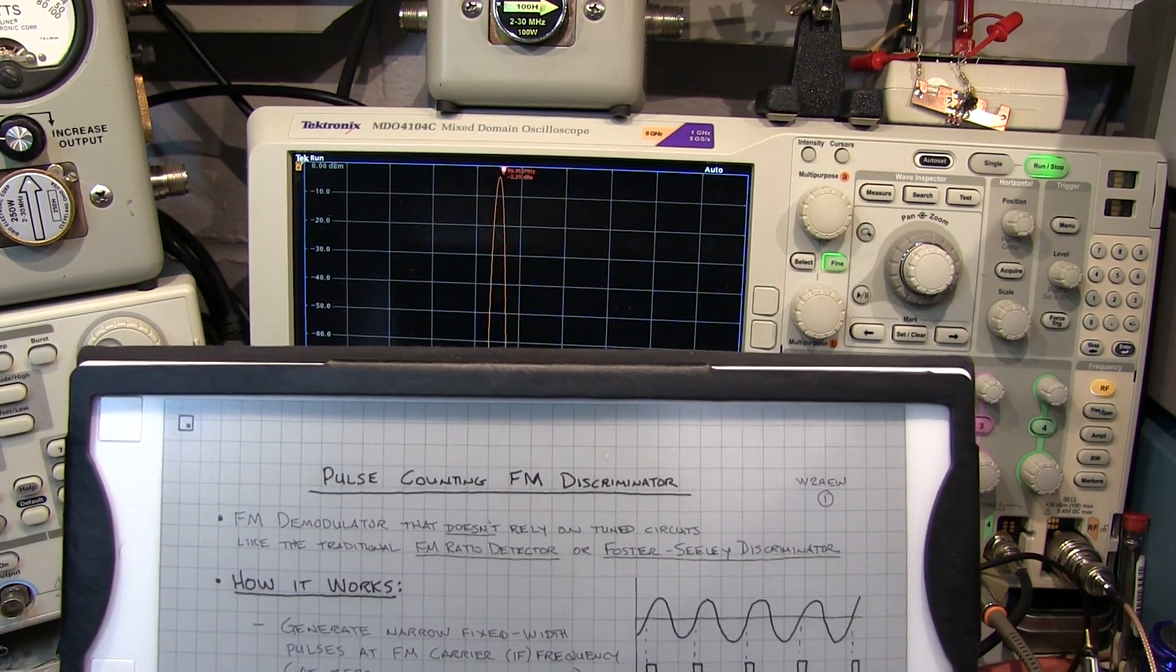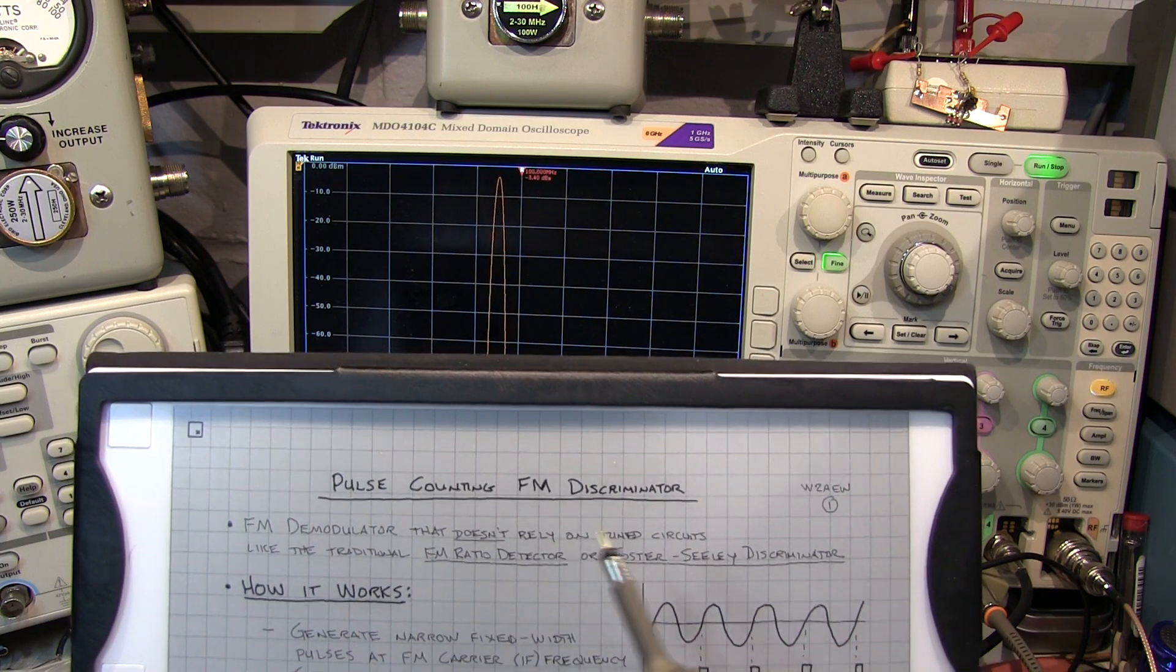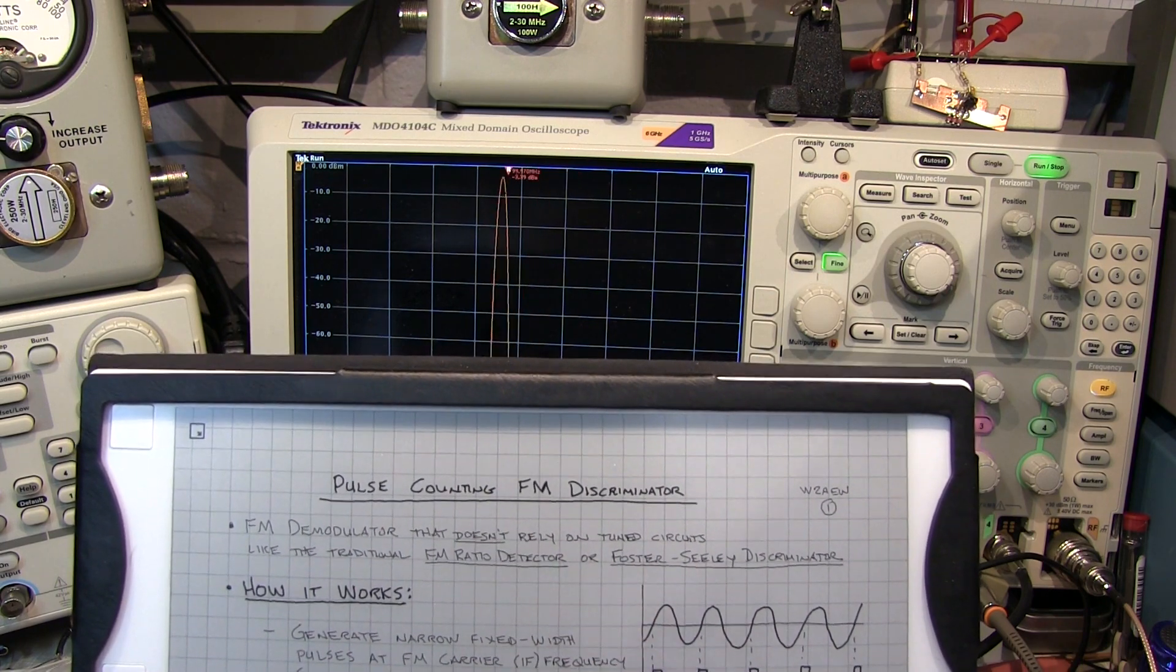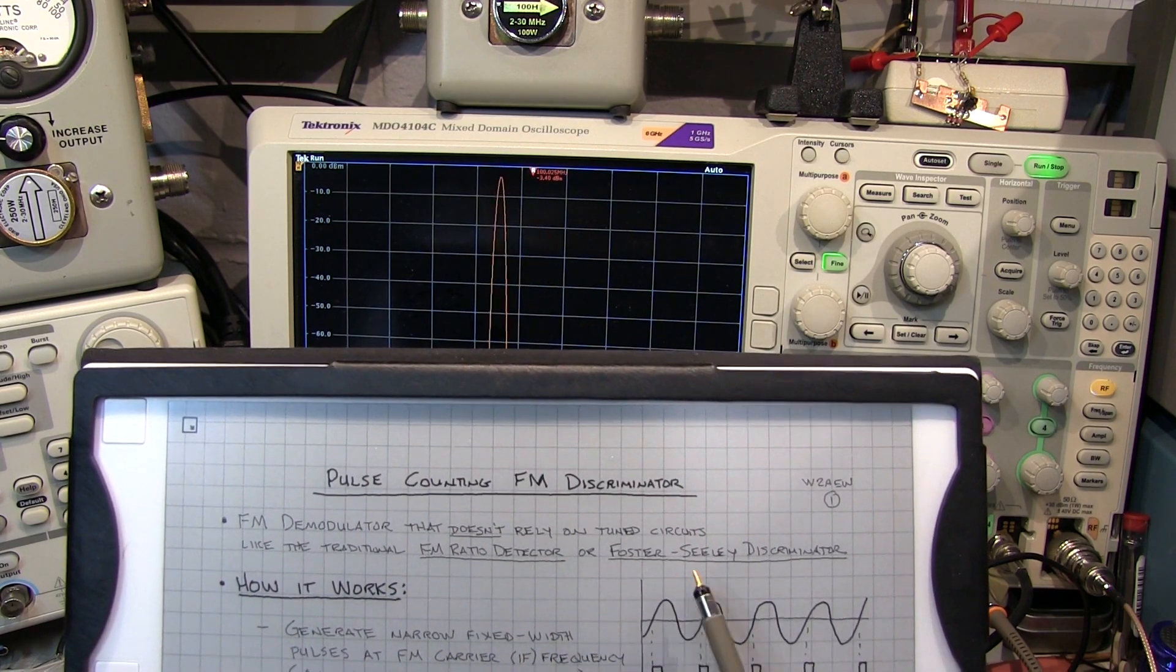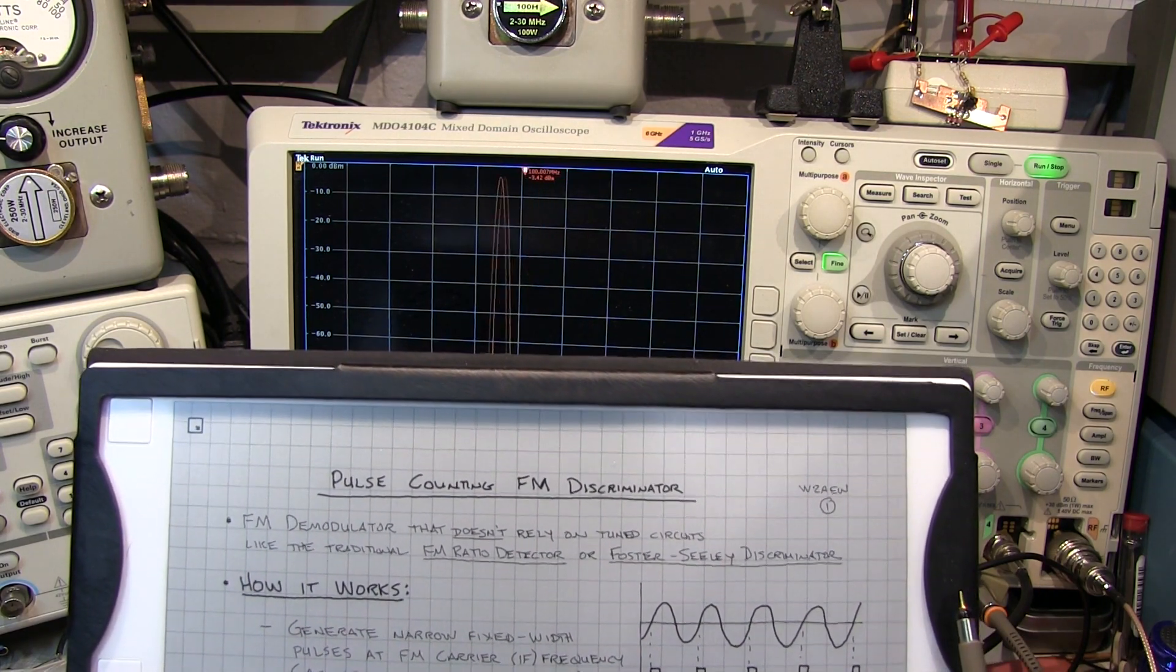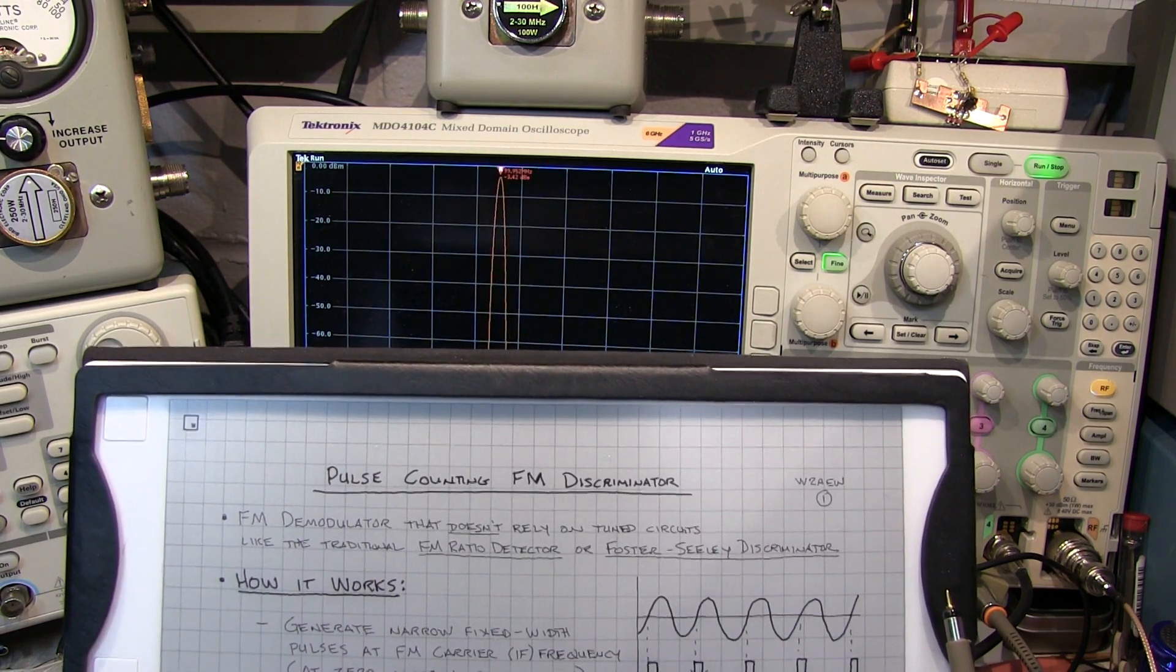In today's video we're going to take a look at a very interesting way of demodulating FM using a pulse counting FM discriminator. Now unlike the traditional FM ratio detector or Foster-Sealy discriminator, the pulse counting FM discriminator doesn't require any tuned circuits.